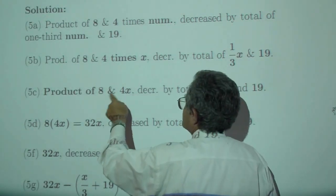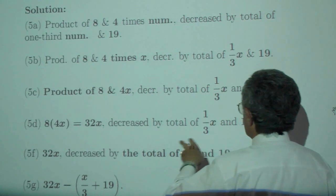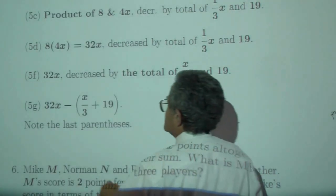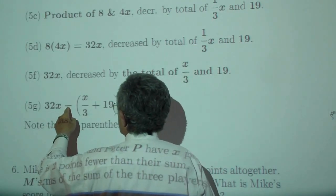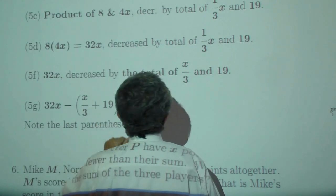Product means you multiply 8 by 4x, which gives you 32x, decreased by the total of 1/3 x and 19. So the product is decreased. You subtract all of x minus 3 plus 19.